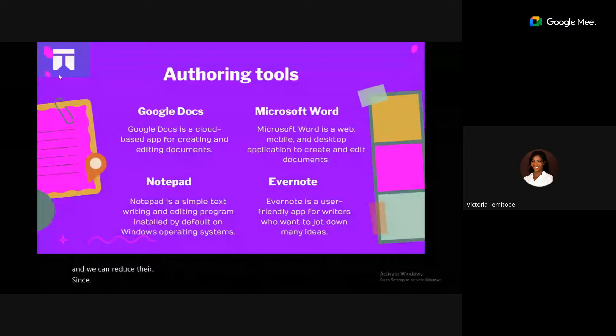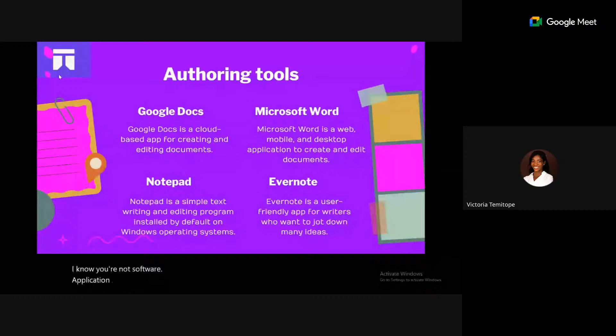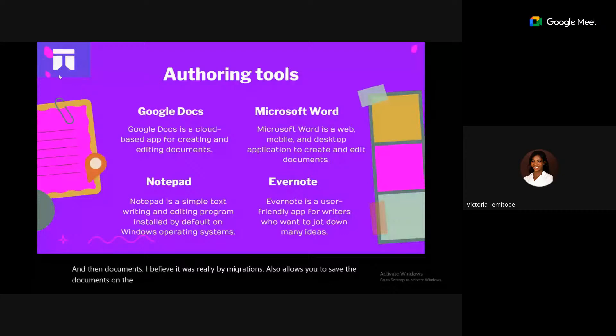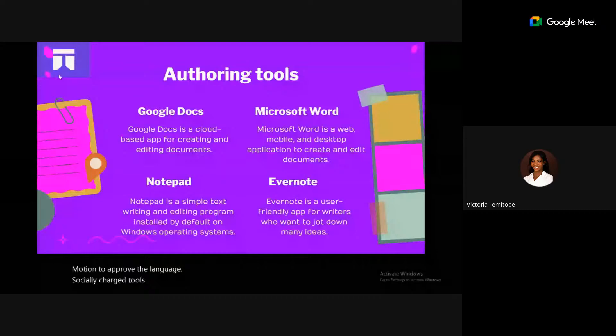Microsoft Word is a web, mobile, and desktop application built by Microsoft for creating and editing documents. It allows you to save documents on the cloud using OneDrive and access them anywhere. You can add images, flowcharts, and customize style, font size, and font type.